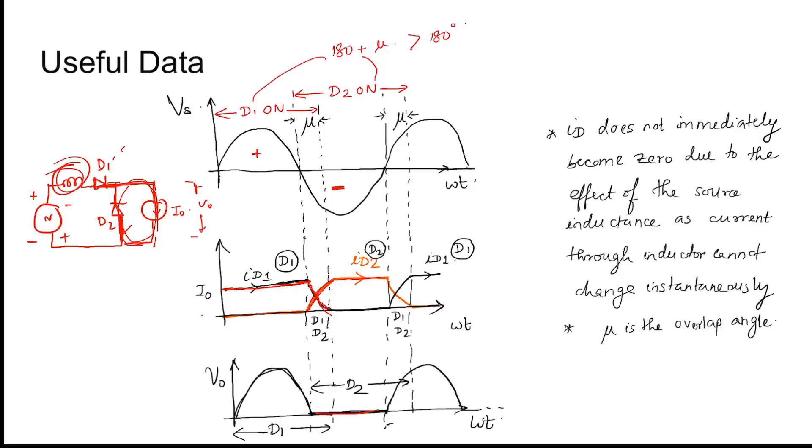D1 is becoming on. ID2 is slowly becoming 0 and ID1 is again slowly increasing to I0. Both the diodes conduct for more than 180 degree.